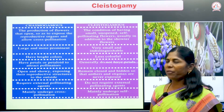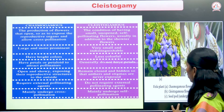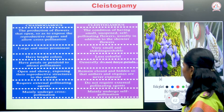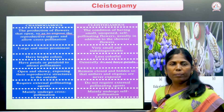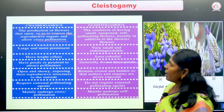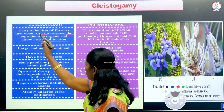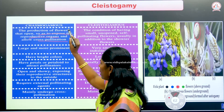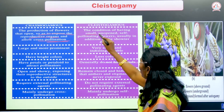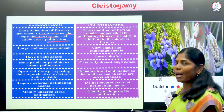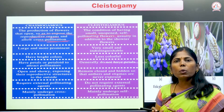What is the difference between cleistogamy and chasmogamy? Chasmogamous flowers are open and expose the reproductive organs, allowing cross pollination. Cleistogamous flowers have small, unopened, self-pollinating flowers — cross pollination will not occur; being bisexual, they can only perform self-pollination.